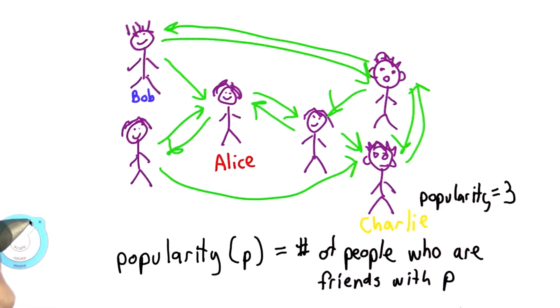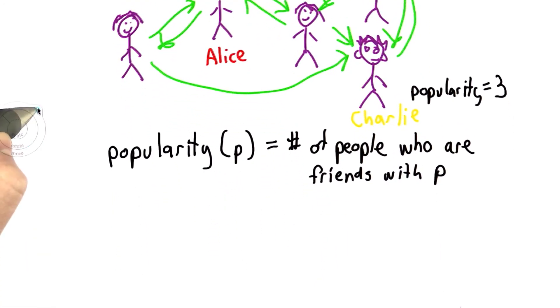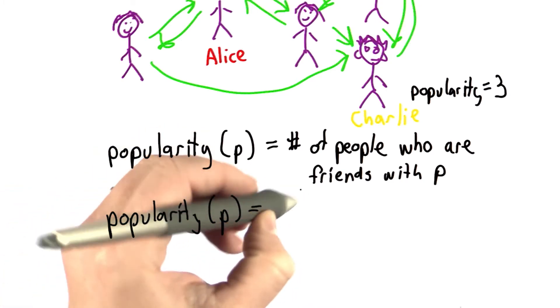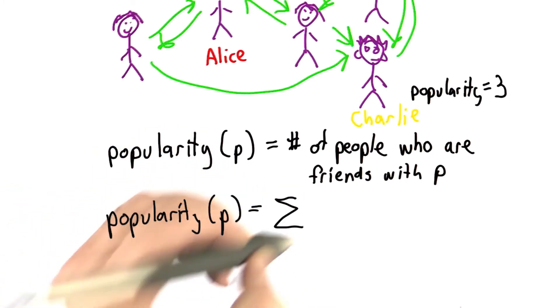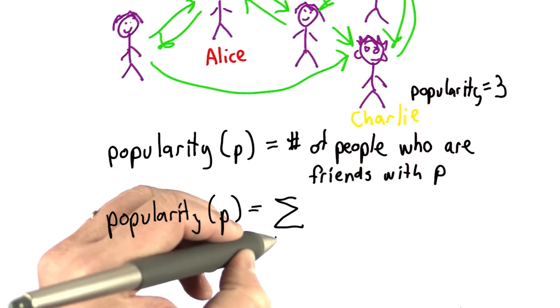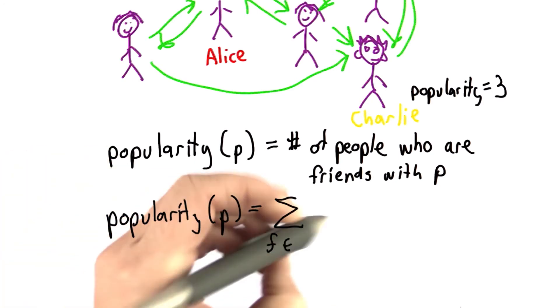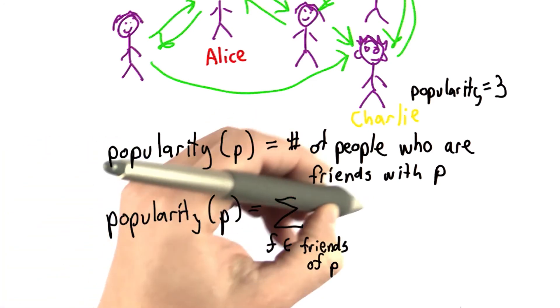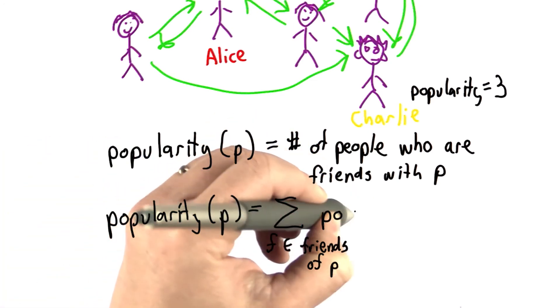So we can change the definition. Let's instead define the popularity score of a person P. Now it's going to be the sum of the popularities of all of their friends. So we can write that in a mathematical way. So using the sigma means to sum up. We're going to take each friend that is in the friends of P, and we're going to sum up the popularity score of the friends.